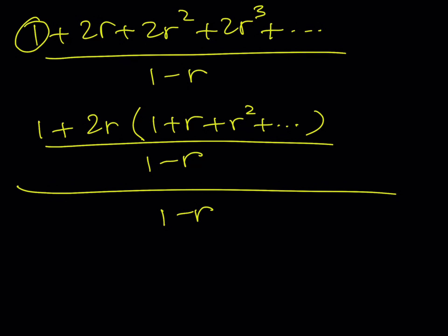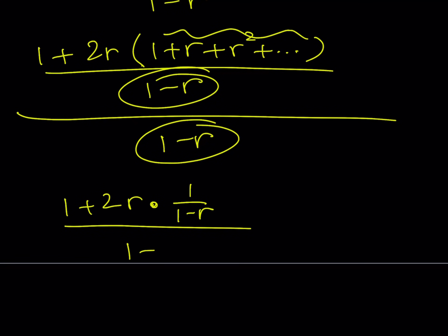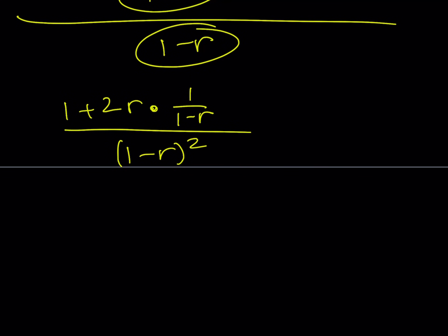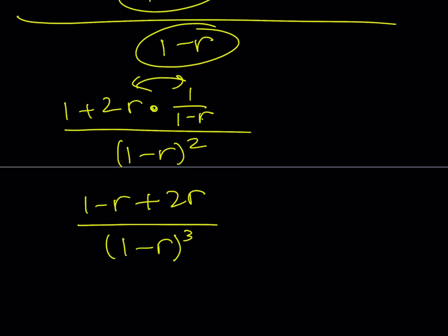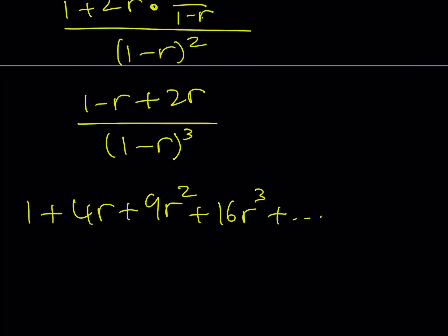This is going to give me the answer. So 1 plus 2r is multiplied by 1 over 1 minus r, and combining those gives 1 over 1 minus r squared. Making a common denominator, the numerator becomes 1 minus r plus 2r, which simplifies to 1 plus r, divided by 1 minus r cubed. Finally we get our answer: 1 plus 4r plus 9r squared plus 16r cubed and so on equals r plus 1 divided by 1 minus r to the third power.